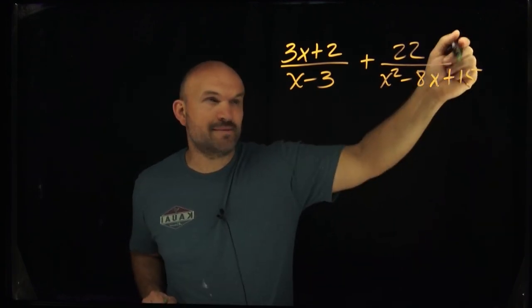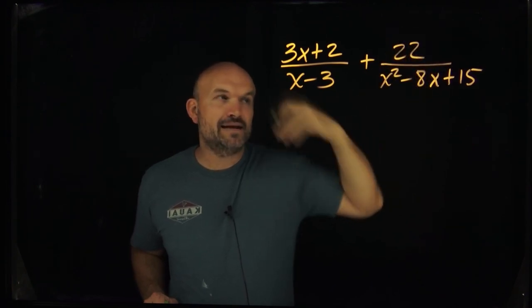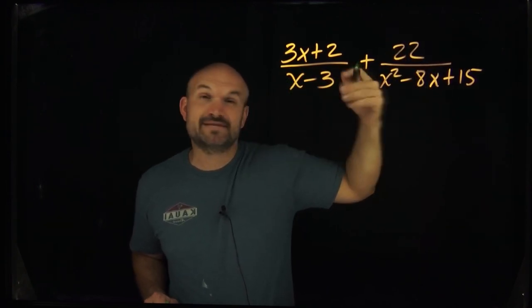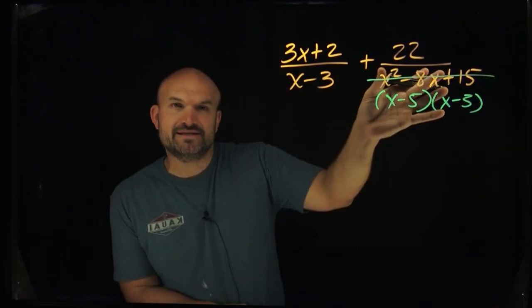And you can see a quadratic trinomial. So what I'm asking myself is what two numbers multiply to give me 15, add to give me negative eight. And immediately that comes to me is going to be x minus five, x minus three. Okay, so I know that the product here is going to give me this denominator.